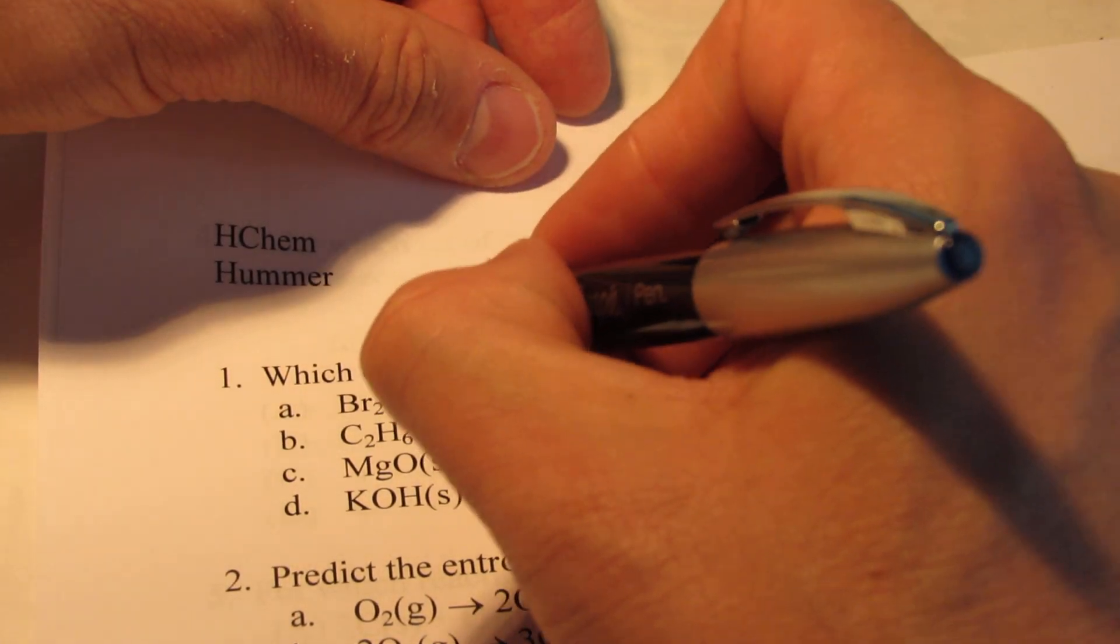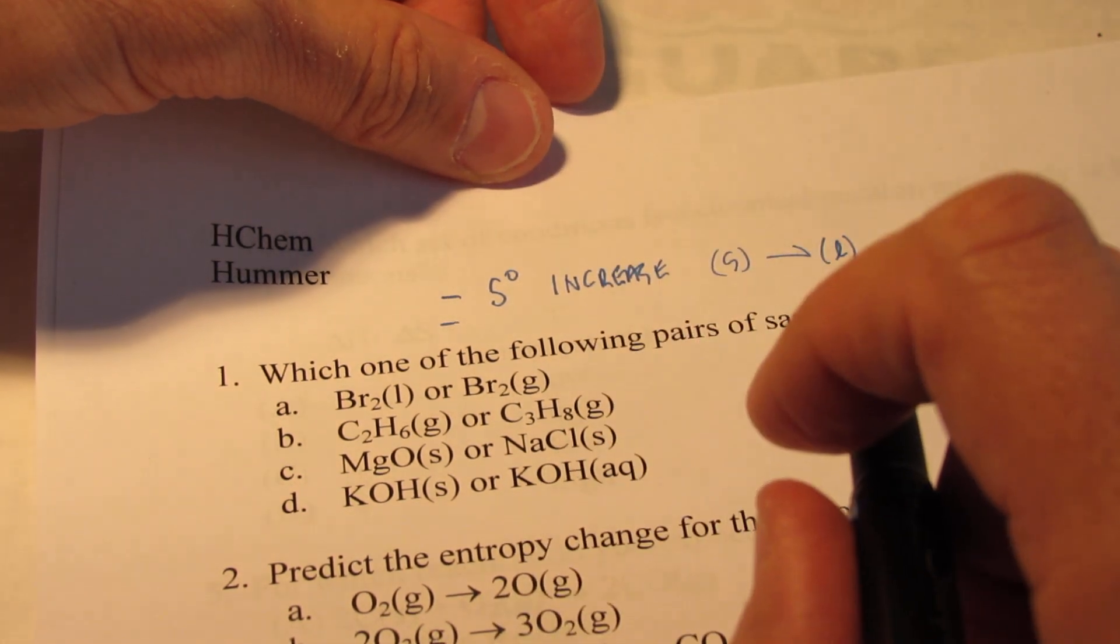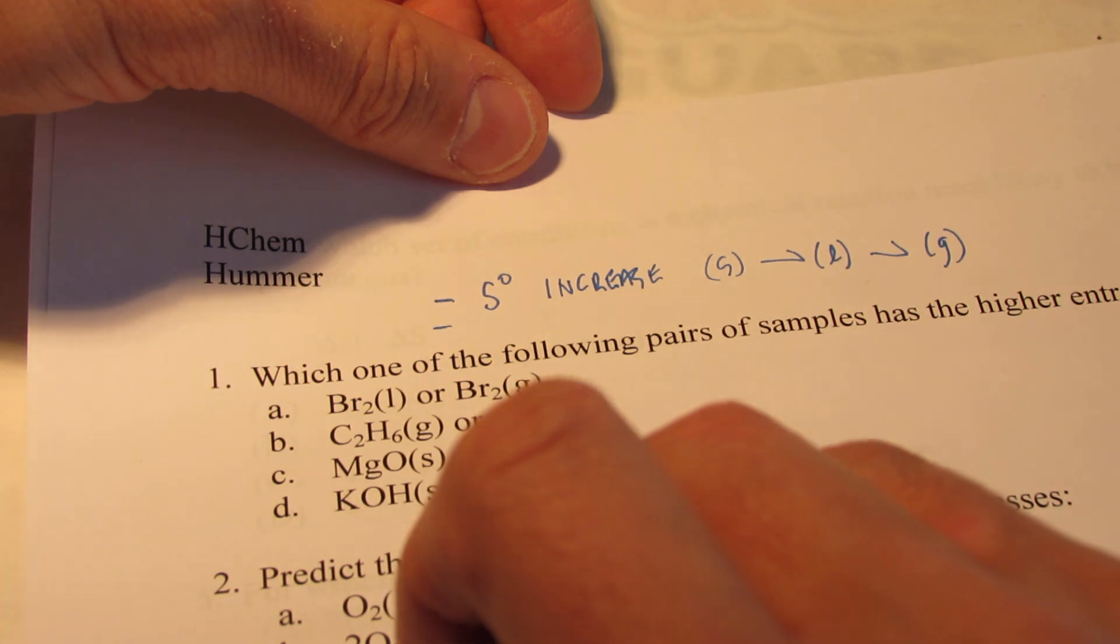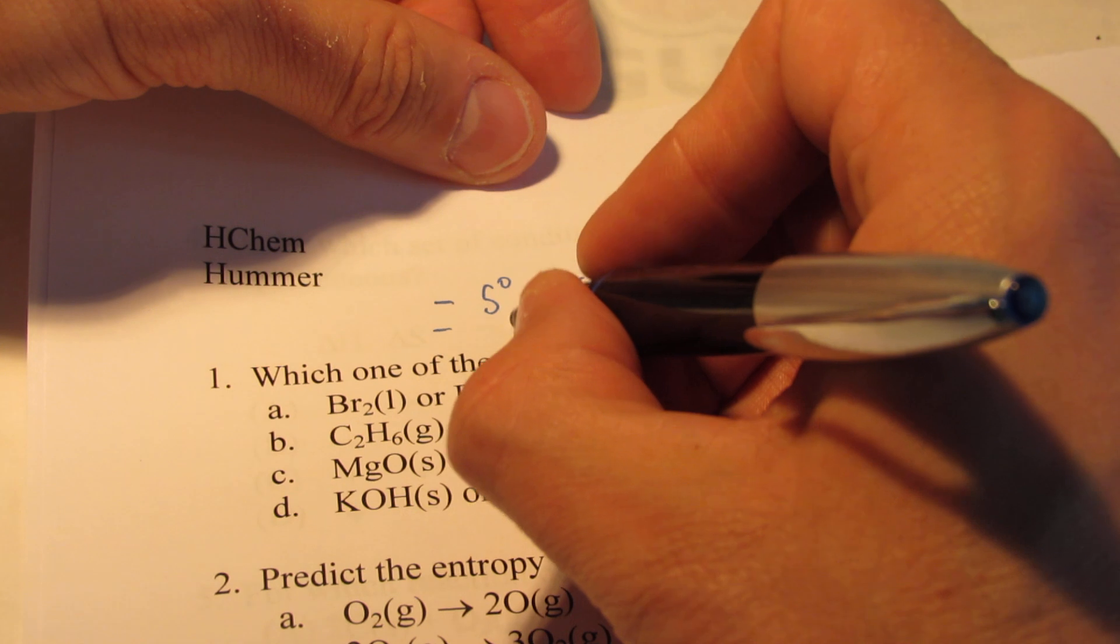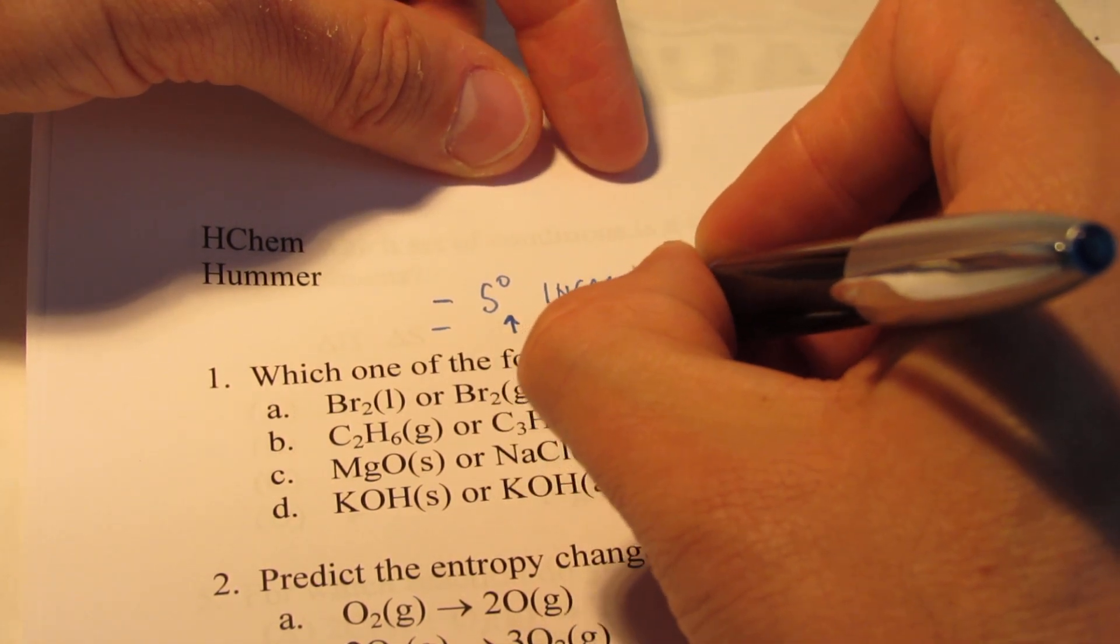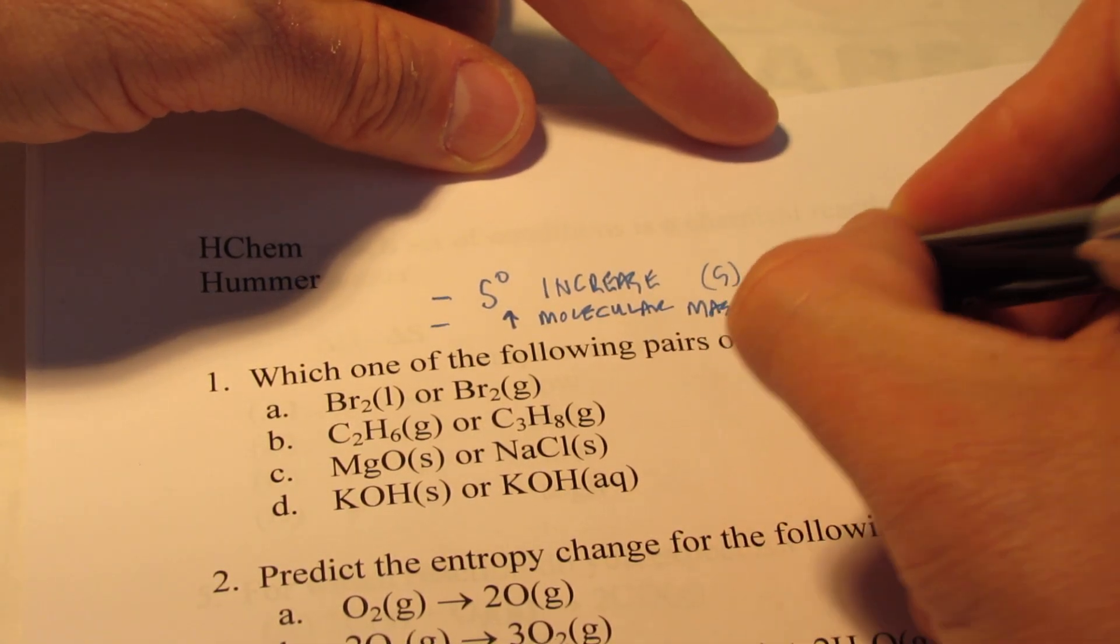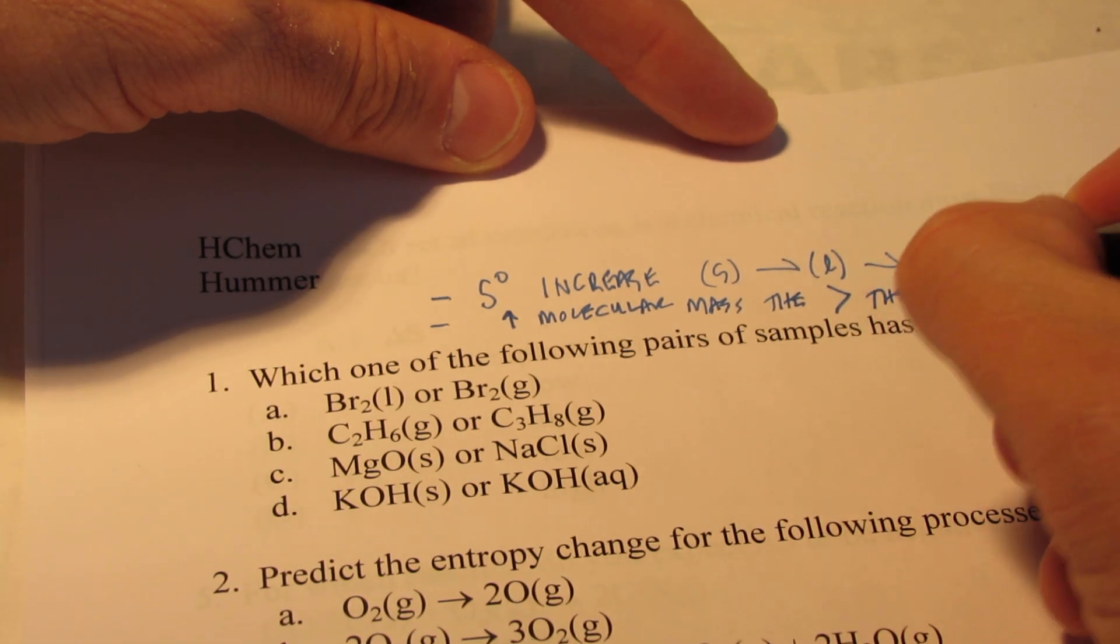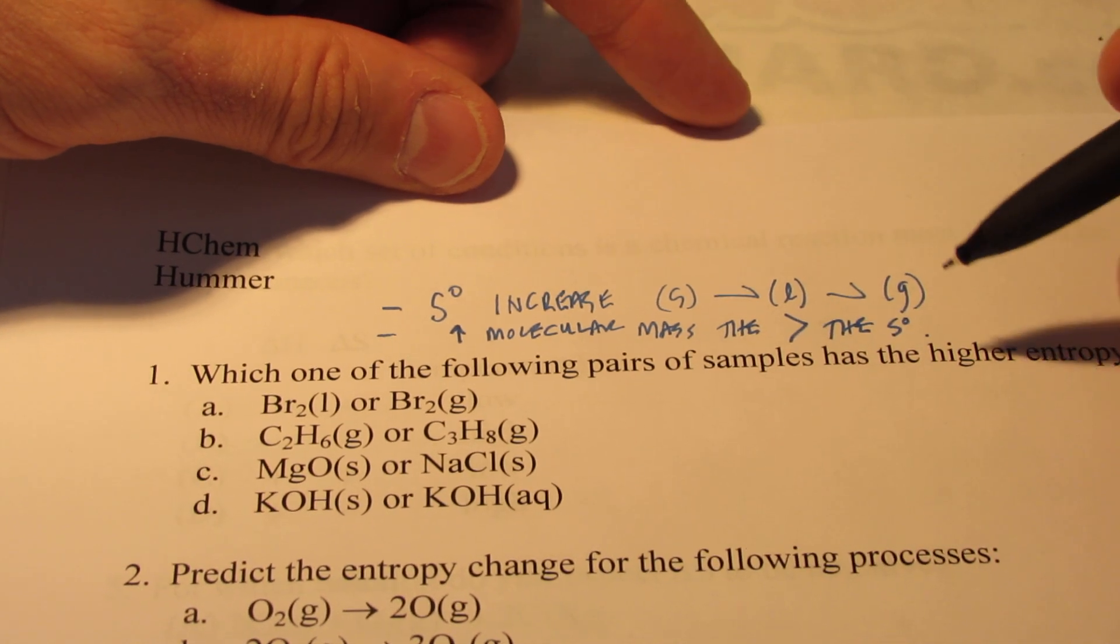Now one other thing I want to add, which I'm probably not going to ask on the exam, but I'm going to throw it in on the review because it's pretty easy. And that is, if you have two substances in the same phase, then you look at their molecular weights, and it turns out that the higher the molecular weight, or the molecular mass if you will, the greater the entropy. So if all things are the same, the substance with the greater molecular weight will have the higher degree of entropy.